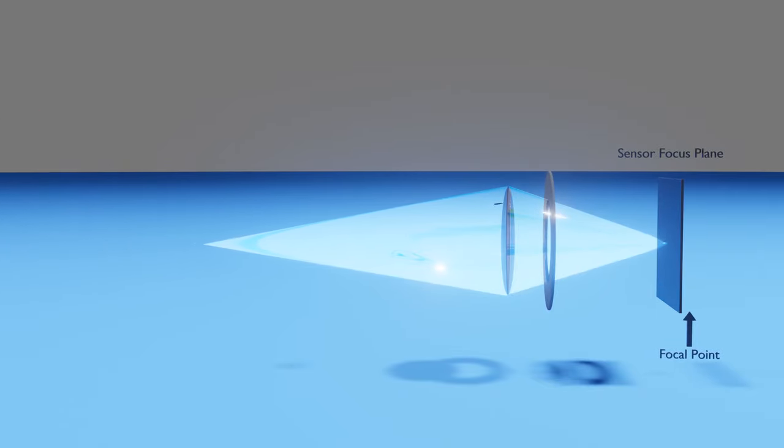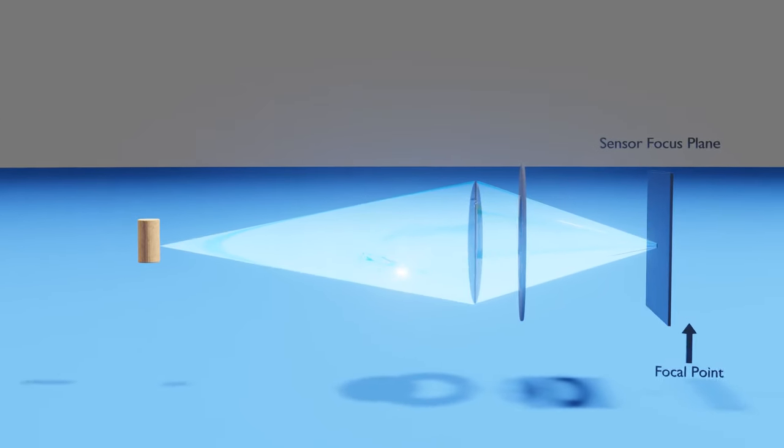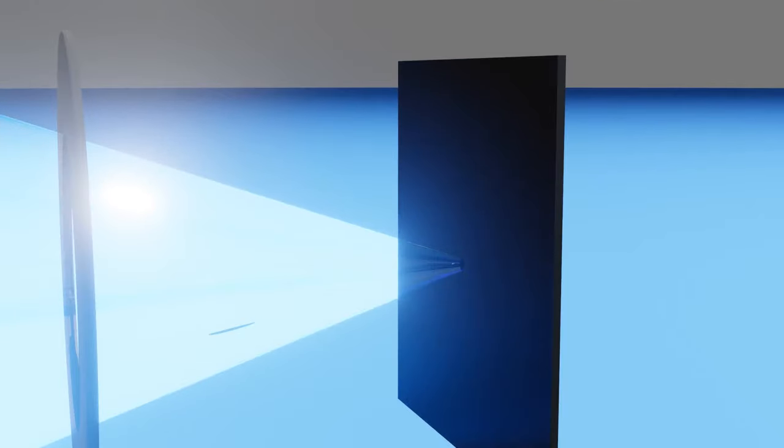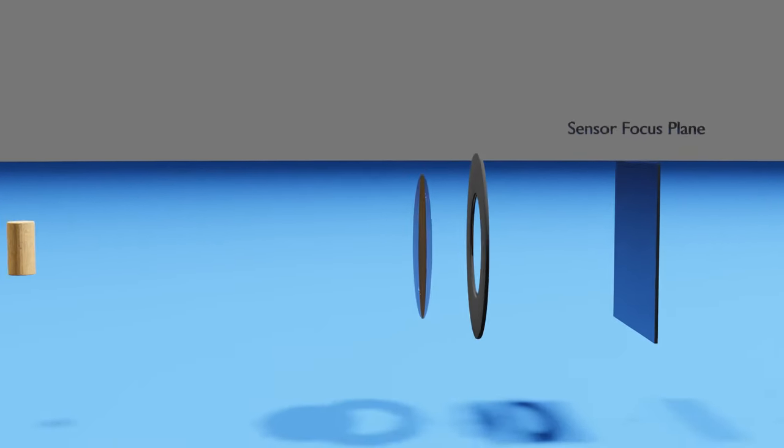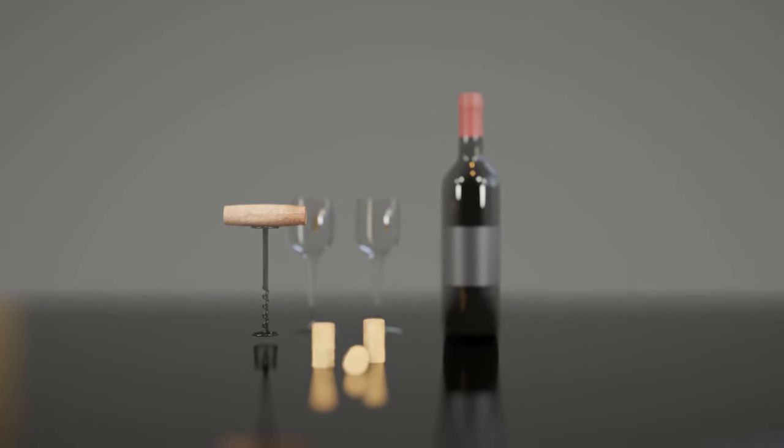Similarly, any point source from the cork will not converge on the sensor. The cork's light rays will be read by the sensor even before they converge into their focal point, which would be behind the sensor. Every point source on the cork is therefore out of focus.